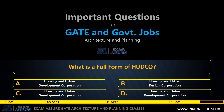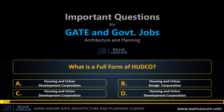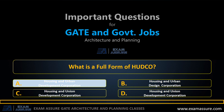What is the full form of HUDCO? Option A: Housing and Urban Development Corporation. Option B: Housing and Urban Design Corporation. Option C: Housing and Union Development Corporation. Option D: Housing and Union Development Corporation. The correct answer is: Housing and Urban Development Corporation.